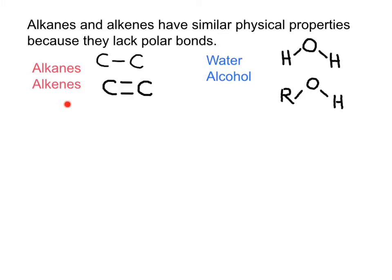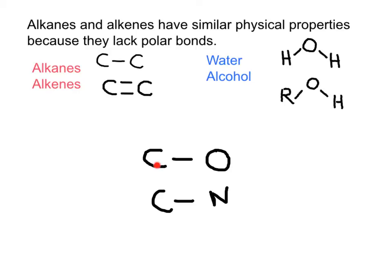Different from the family of hydrocarbons, families with electronegative atoms such as the family of alcohols will have polar bonds. For example, in an alcohol, a carbon will be more electropositive and an oxygen, rich in electrons, will have a partial negative charge. Similarly, in the family of amines, a carbon will be electropositive and the nitrogen will also be electronegative.